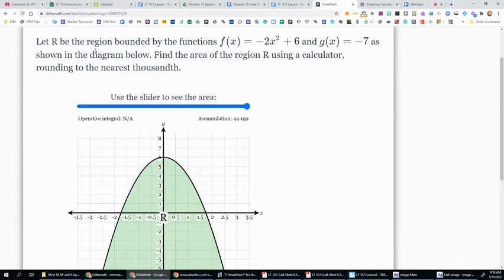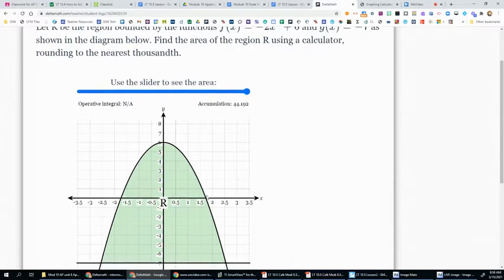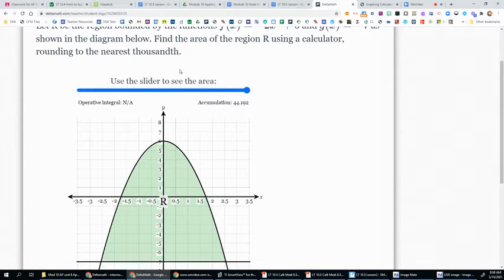It is the region R being bounded by the functions f of x equals negative 2x squared plus 6 and g of x equals negative 7, as in the diagram below. We're going to find the area and round to the nearest thousandth.